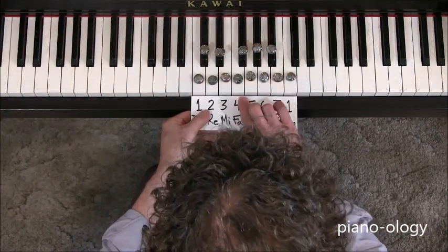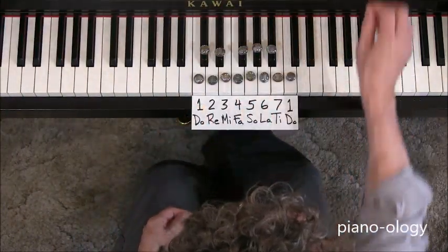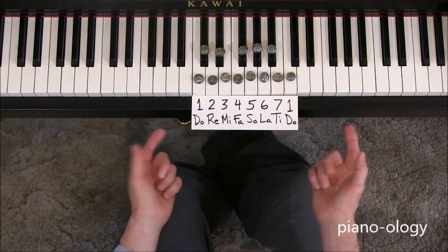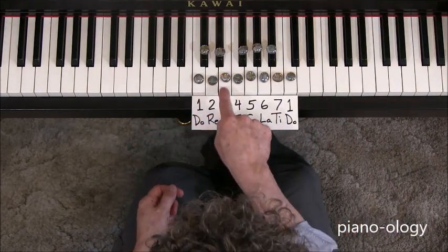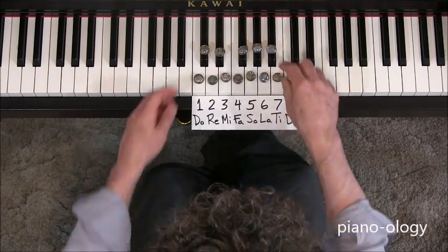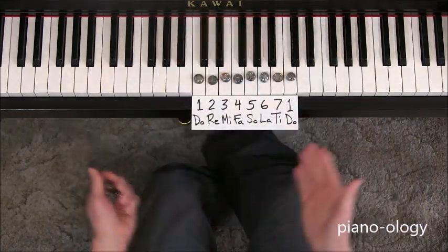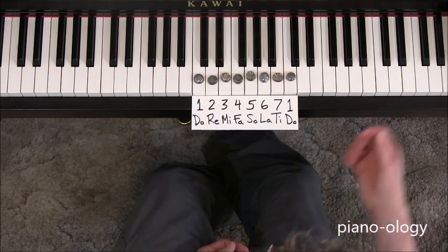So now let's do a few examples of some very specific scale types and how those are defined using both the number and solfege system. Let's remind ourselves, here's the major scale. So what are those notes? One, two, three, four, five, six, seven, one.